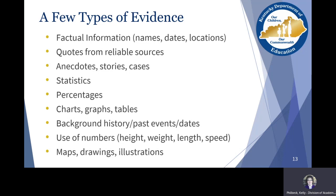Writers also use statistics and percentages — that use of numbers is very important. Statistics, percentages, and use of numbers like height, weight, length, and speed. We also have visuals that we think about as evidence: charts, graphs, tables, maps, drawings, and illustrations are important vehicles for evidence. We want to make sure students are taking the time to look at those visual elements so they're able to see how important information is provided through visual literacy.